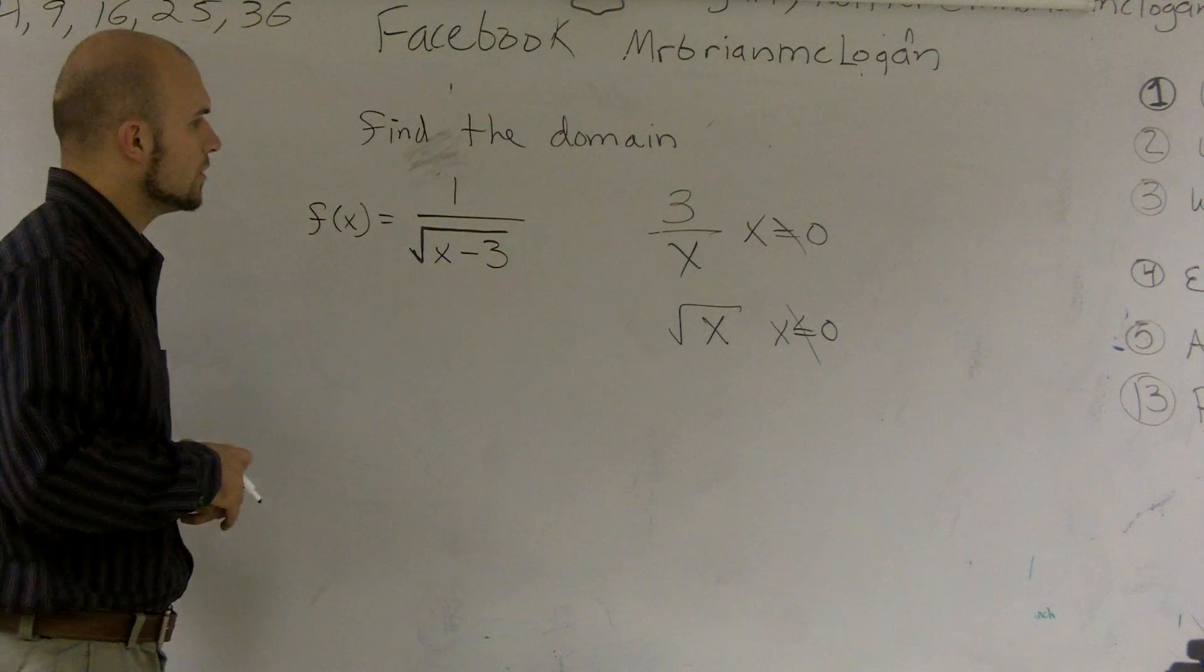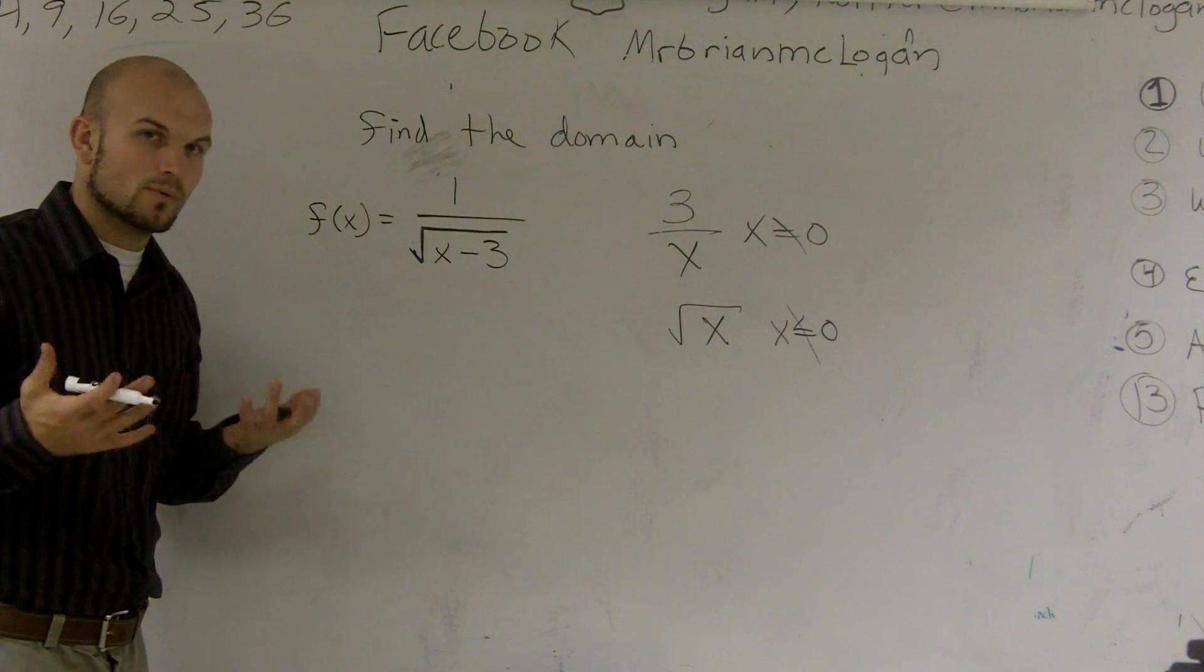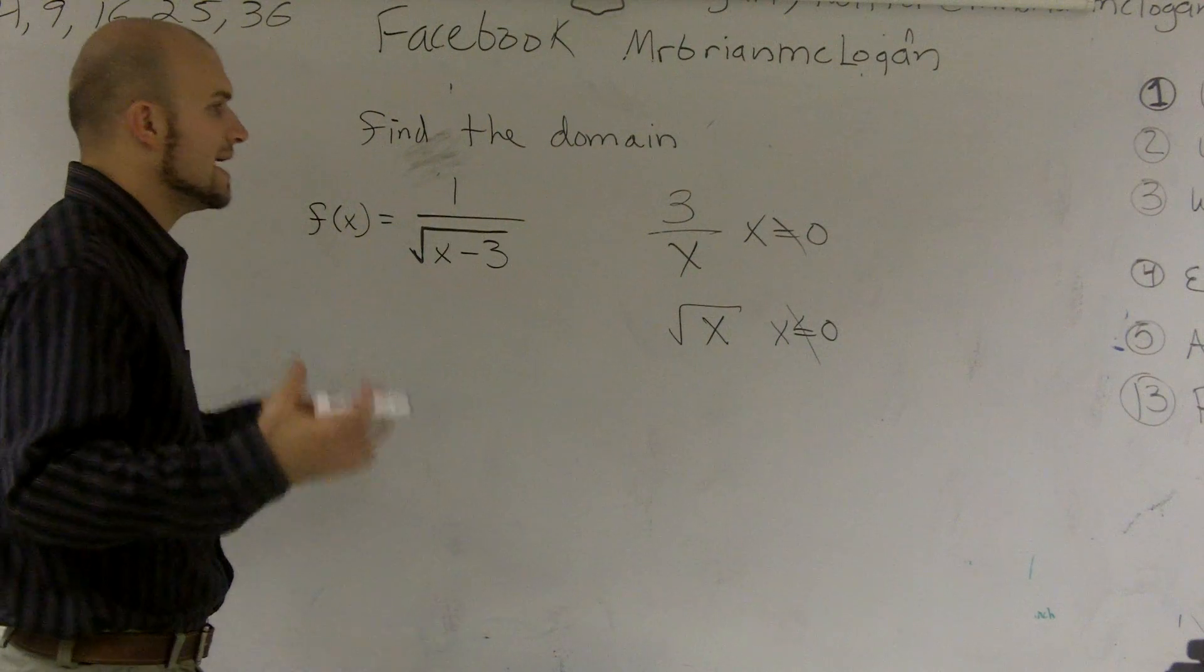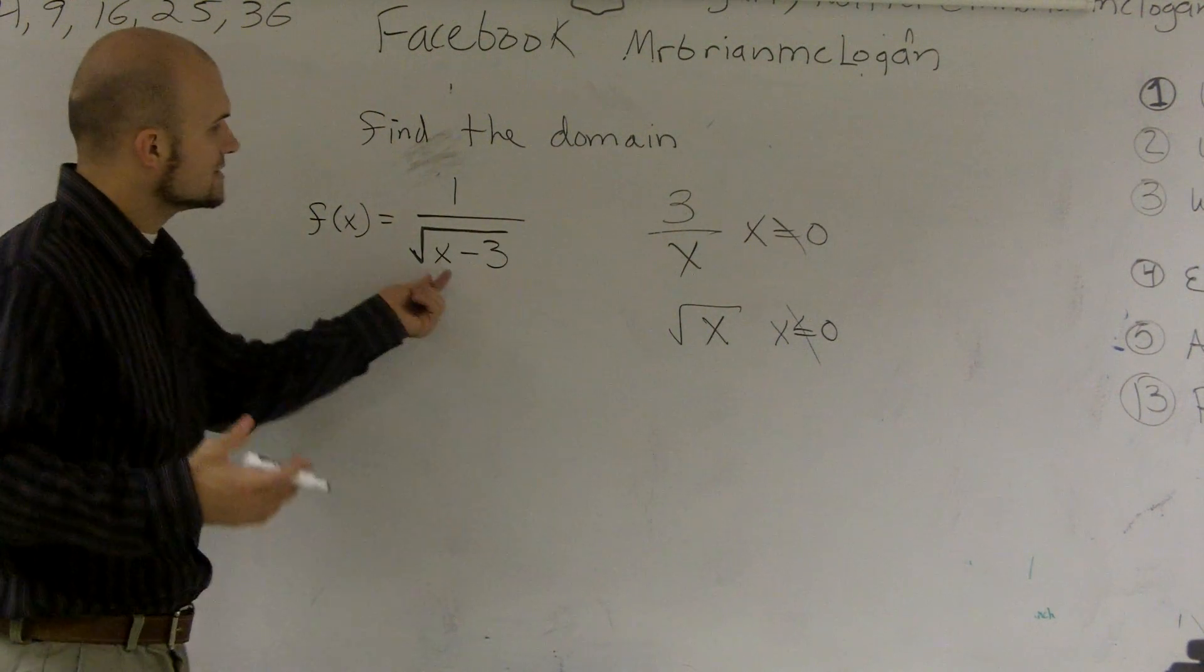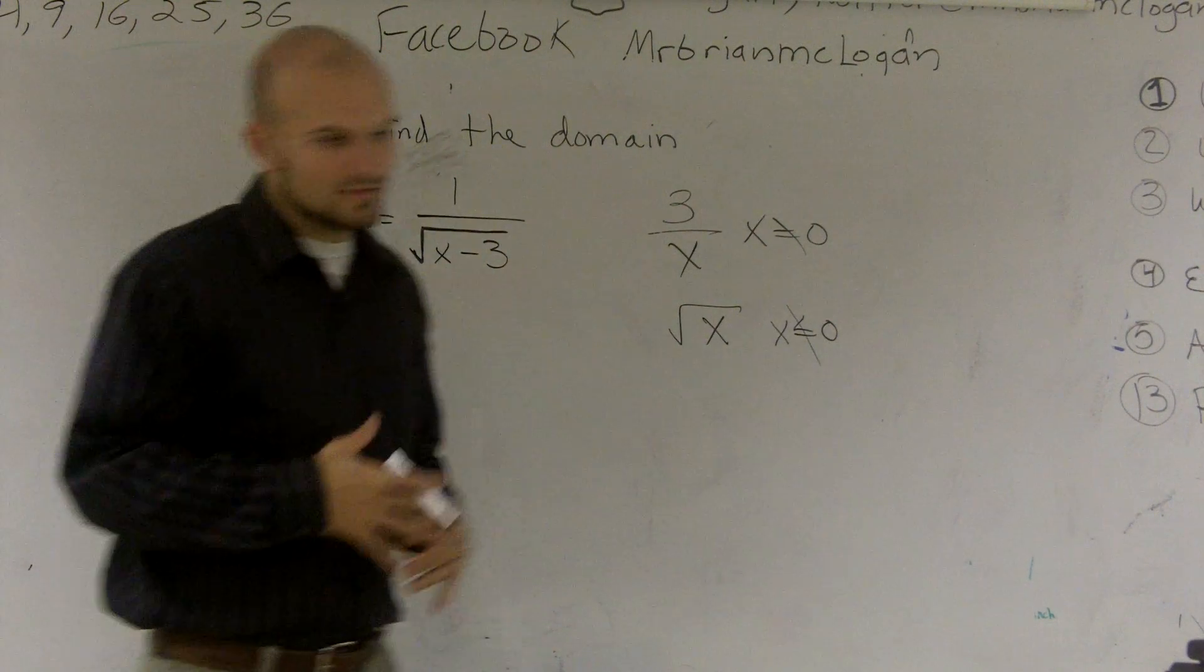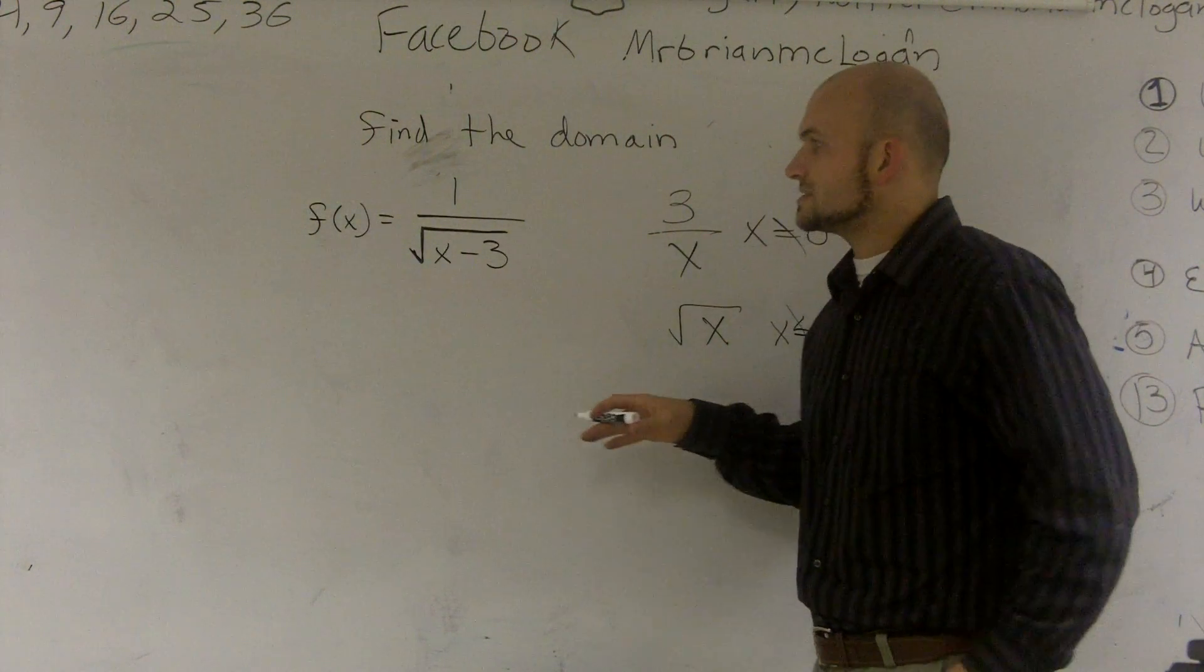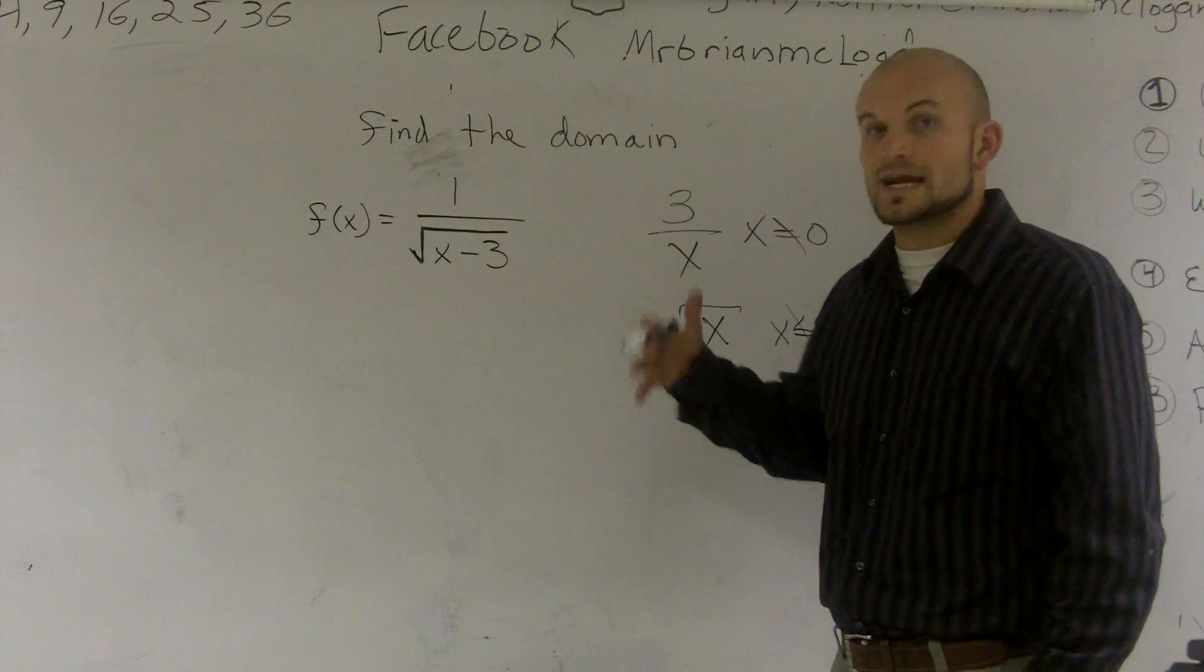So here I have a function 1 over the square root of x minus 3. And what I need to do is determine what is the domain. So what are the possible numbers that I can plug into this function and get an output value? Rather than trying to think of all the numbers that I can plug in to get an output value, let's think of all the numbers that are not going to give me a value.